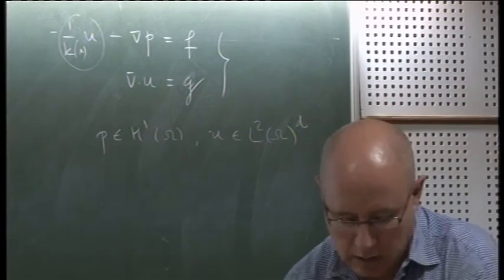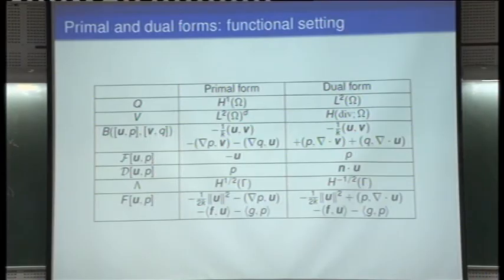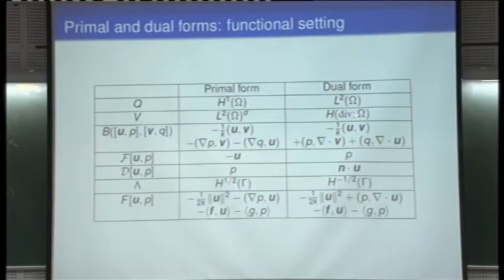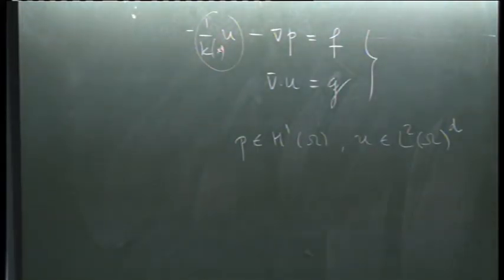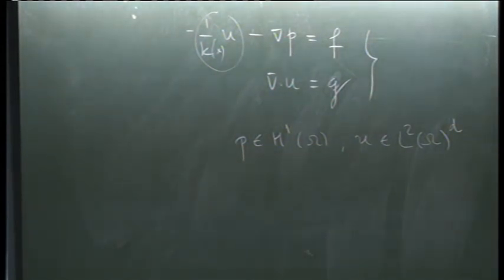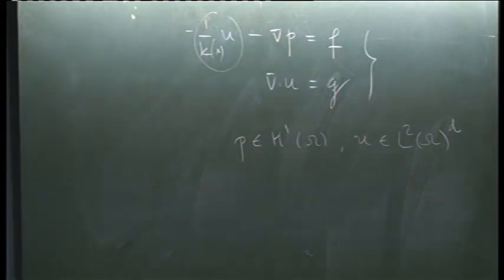In the dual form, we have more regularity for U than for P. This essentially means we want smoother velocities than pressures — the variable of interest is not the pressure but the velocity. This happens in porous media flow: we are more interested in the flow velocities than in the pressures. That's why it is convenient to write the flow equations this way. Darcy's model arose in porous media flow.